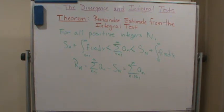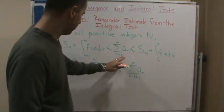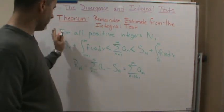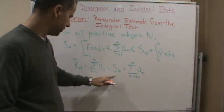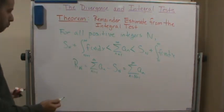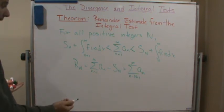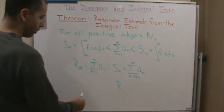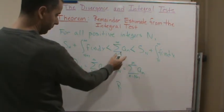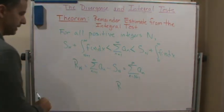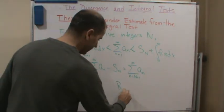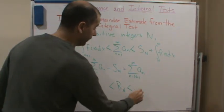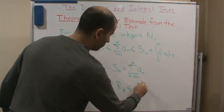So this means that the remainder satisfies the following estimate. See where we're going with this? We have this inequality, we know the remainder equals this, which equals this sum — so now if we put it together, that means if we subtract S_n from each piece, the remainder R_n has to be between those two integrals.